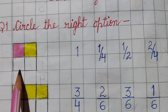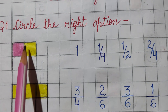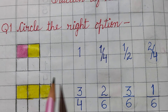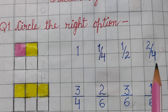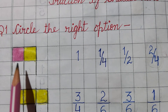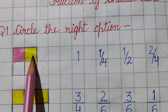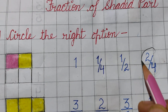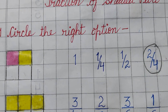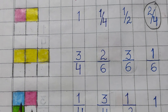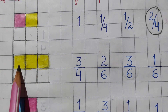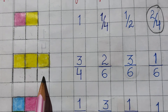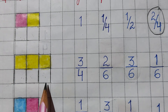This shape is a whole shape and it has been divided into one, two, three, four — four equal parts. The next shape has six parts, so our denominator should be six.